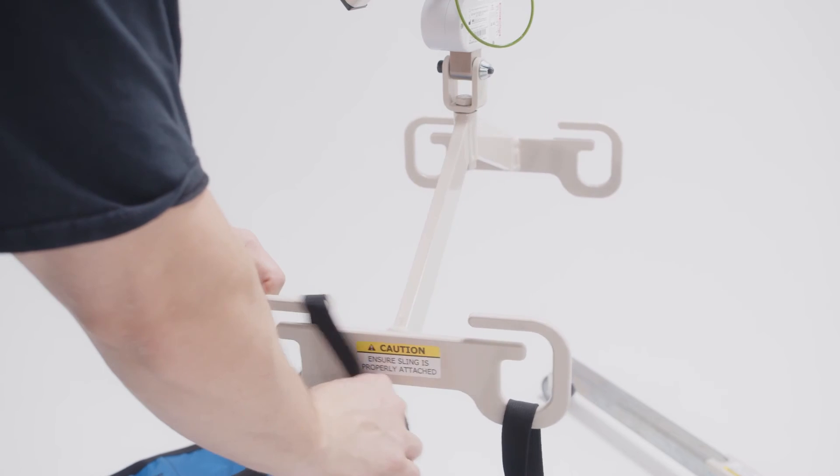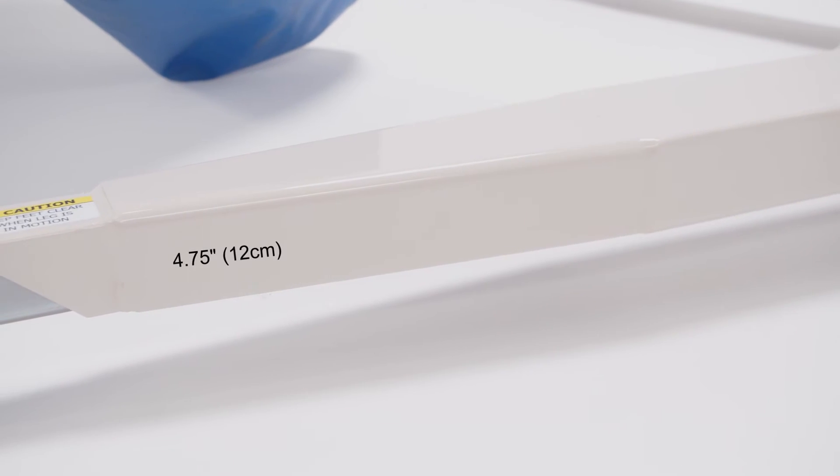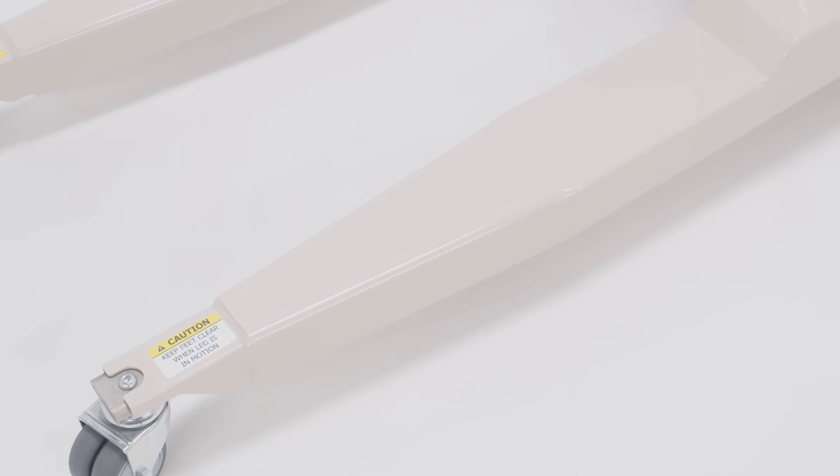The four-hook spreader bar securely holds the sling for patient transfer. The base height clearance is 4.75 inches, allowing it to fit under most beds.